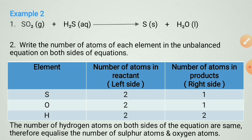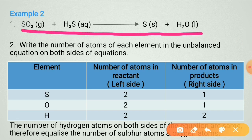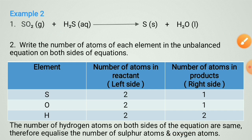Next example: the equation is given. Check if the number of atoms on both sides are the same. This reaction is unbalanced. Write down the elements: sulfur is two in the reactant and one in the product; oxygen is two in the reactant and one in the product; hydrogen is two in both reactant and product. Hydrogen is balanced but sulfur and oxygen need to be equalized.